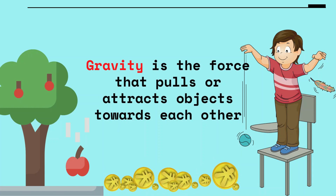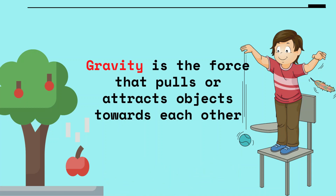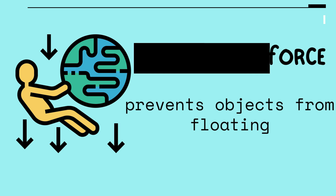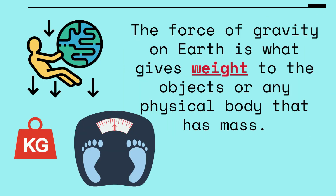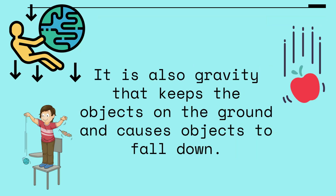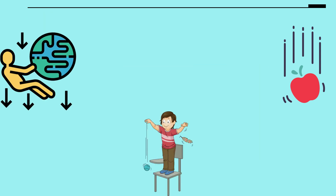Gravity is a force that pulls or attracts objects toward each other. It also prevents objects from floating by pulling them toward the center of the earth. The force of gravity on earth gives weight to objects or any physical body that has mass, and it also keeps objects on the ground and causes them to fall down.